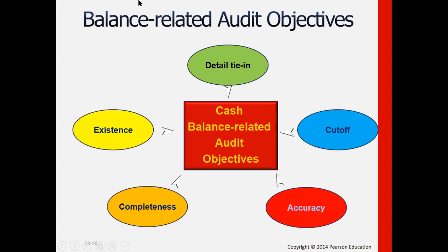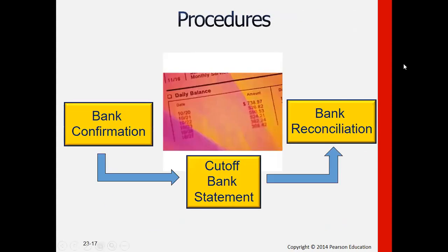The balance-related audit objectives or management representations for cash include: whether transactions recorded actually existed, whether all existing cash transactions are completely recorded, whether the amounts are correct, whether they are recorded in the correct accounting period, and whether the details compute to the correct balances. Audit procedures include obtaining a cut-off bank statement, confirming items from the bank, and performing the bank reconciliation.